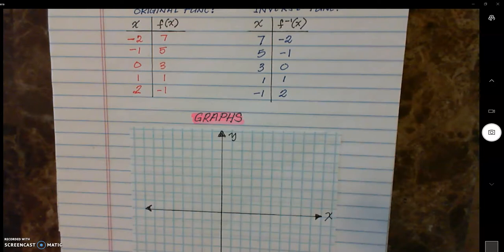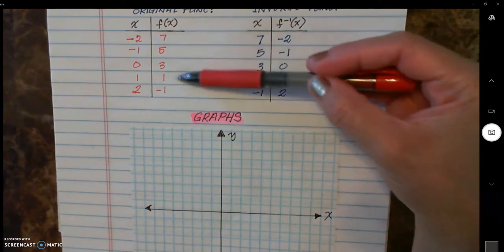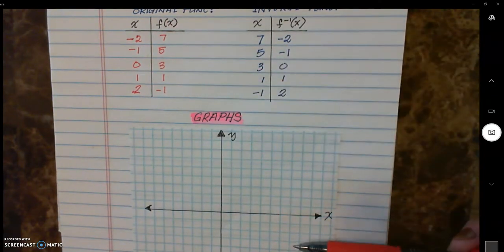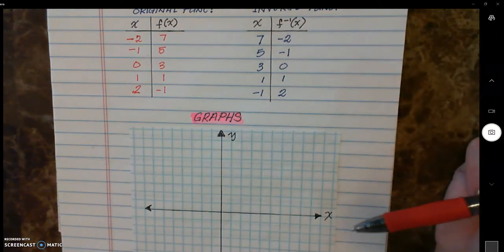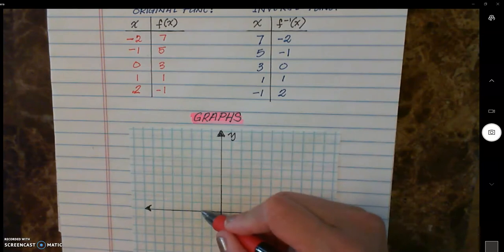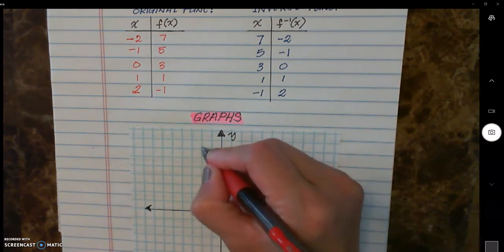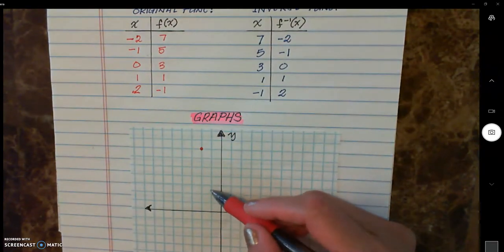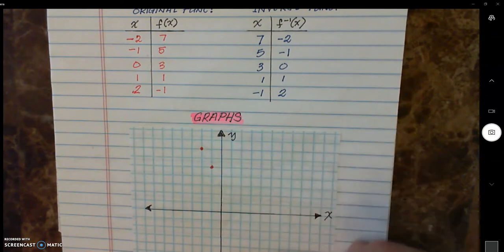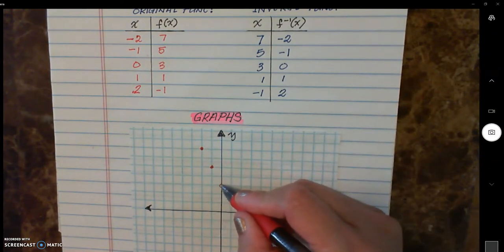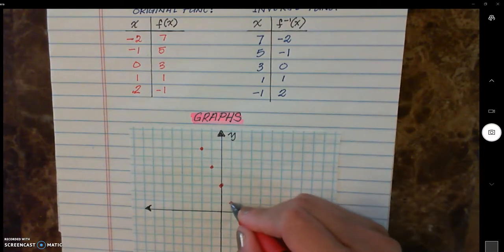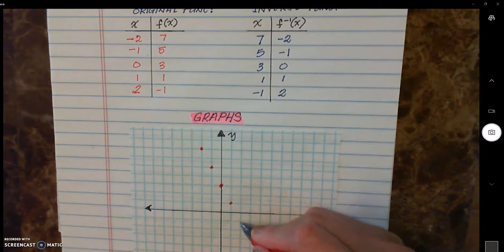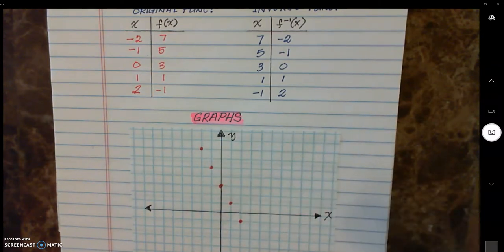Now I'm excited to show you how to generate the inverse of graphs. We'll use the two tables we have and plot all the original points first. Plotting the original function: negative 2 comma 7; negative 1 comma 5; 0 comma 3; 1 comma 1; and 2 comma negative 1. The points follow a consistent slope and are all plotted correctly.